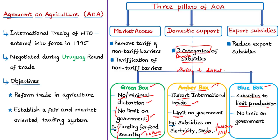Blue box subsidies aim to limit production — by limiting production quotas or asking farmers to set aside part of their land. According to the WTO, the blue box is the amber box with conditions designed to reduce distortion by limiting production. Some countries want to keep the blue box as a crucial means of moving away from distorting amber box subsidies, so that farmers are not adversely affected. At present, there is no limit on blue box subsidies.